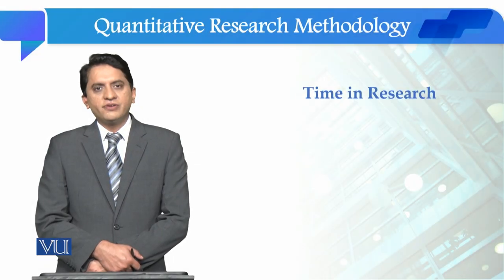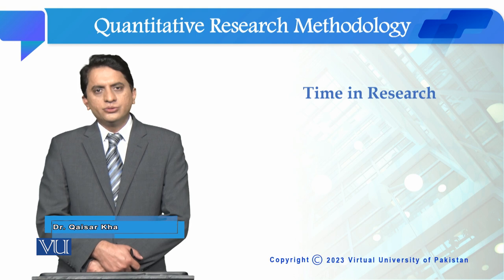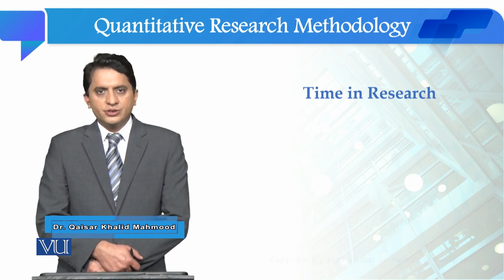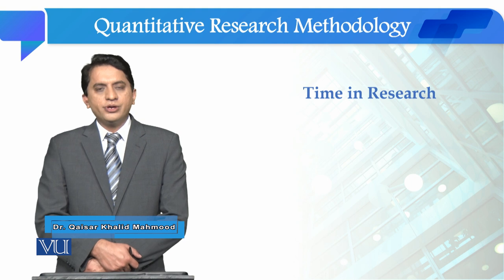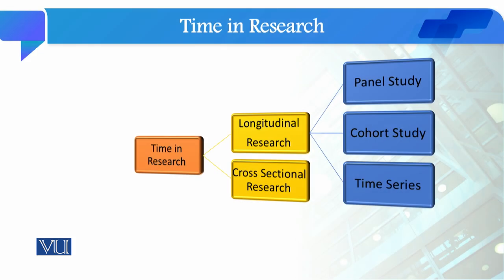Dear students, we have studied two dimensions of social research: use and audience of research, and purpose of research. Now we are going to study the third dimension of social research, which is time in research. On the basis of time in research, we categorize two types of research: cross-sectional research and longitudinal research.